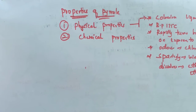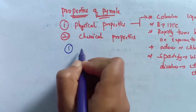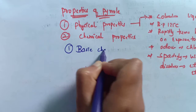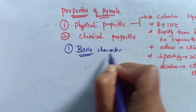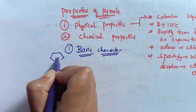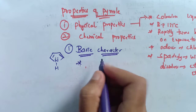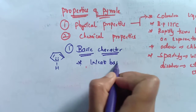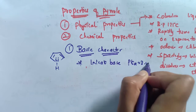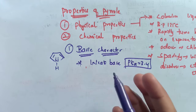Now coming to the chemical properties, we have two chemical properties to study: the basic character and the acidic character of pyrrole. Pyrrole is a weak base — it has a pKa value of 3.4. But why is it a weak base? The reason for this weak base character is that the lone pair of electrons on nitrogen is involved in the formation of delocalized pi molecular orbitals.